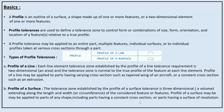There are basically two types of profile tolerances: profile of a line and profile of a surface. For profile of a line, each line element tolerance zone is established by the profile of a line tolerance requirement, which is two-dimensional or an area. The tolerance zone is normal to the true profile of the feature at each line element. Profile of a line may be applied to parts having various cross sections such as a tapered wing of an aircraft, or a constant cross section such as an extrusion.